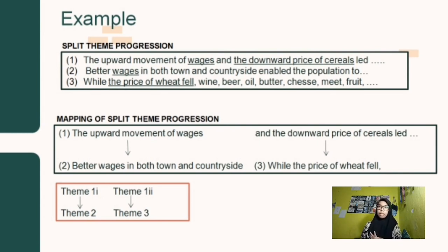Yang pertama ada theme 1A and the second is theme 1B. Nah, yang theme 1A itu kita jadikan menjadi theme yang kedua. Karena theme yang pertama wages, maka theme yang kedua itu themenya wages juga. Jadi, klausa yang barunya adalah better wages in both towns and countryside. Yang kedua ada, and the downward price of cereals led. Nah, kita namaikan theme 1B, nah, maka theme tersebut kita jadikan menjadi theme 3, yang themenya adalah the price of wheat fell. Nah, seperti itu.